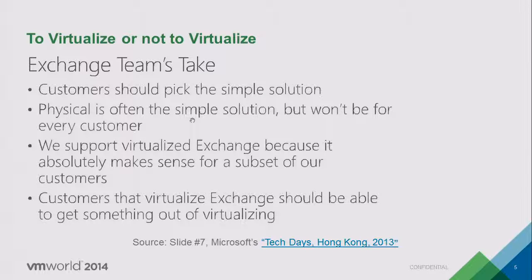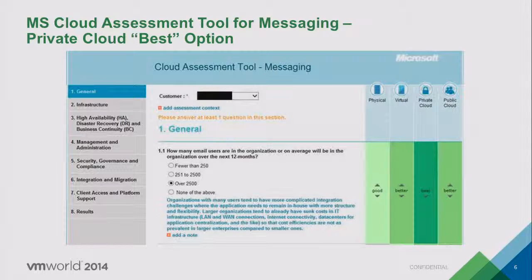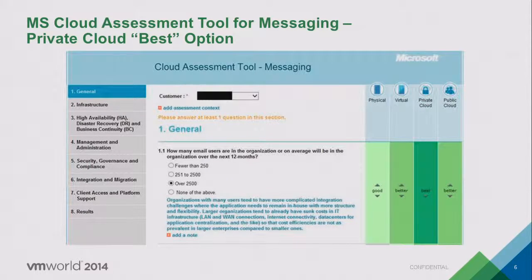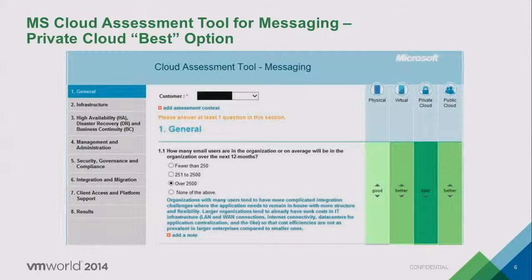Since Exchange Server 2010 SP1, Microsoft has supported virtualizing every component — every role of Exchange. If you go online and look at the Microsoft cloud assessment tool for messaging infrastructure, when you plug in your mailbox numbers, it will spit out a scorecard where private cloud is deemed by Microsoft to be the best option for virtualizing Exchange infrastructure once you start getting to scale. Private cloud to us is vSphere infrastructure on premise, and that's what Microsoft is blessing here.